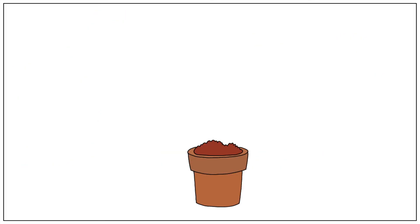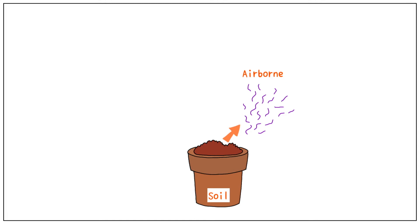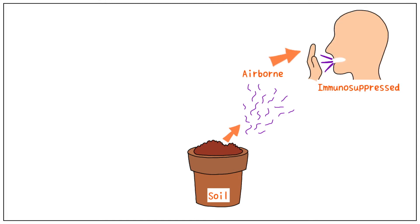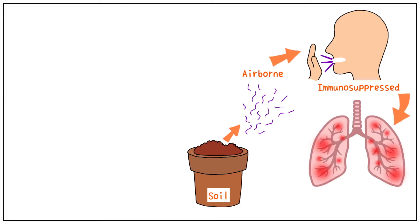Soil is the most common source of Nocardia, which is why it is always an exogenous infection — from an outside source. Through the soil, some organisms become airborne. If breathed in by an immunosuppressed individual, they cause infection. This infection is characterized by localized diffuse pneumonia, which has tuberculosis-like signs and symptoms.